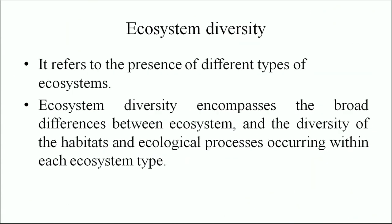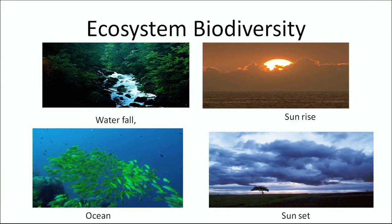Ecosystem diversity refers to the presence of different types of ecosystems. It encompasses the broad differences between ecosystems and the diversity of habitats and ecological processes occurring within each ecosystem type. For example, tropical South India with rich species diversity will have altogether different structure compared to the desert ecosystem, which has far fewer plants and animal species. The same differences can be observed in marine habitats — freshwater, sea, or ocean. This diagram depicts ecosystem biodiversity.